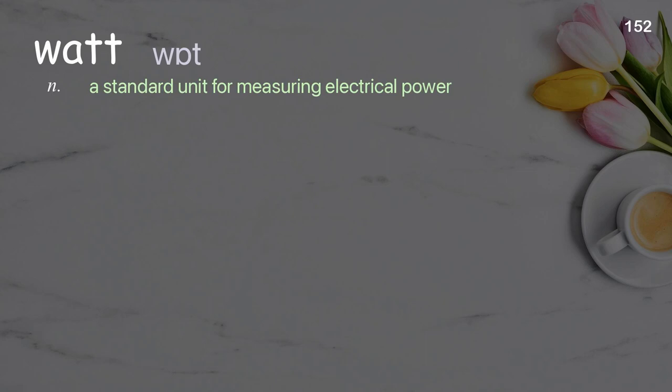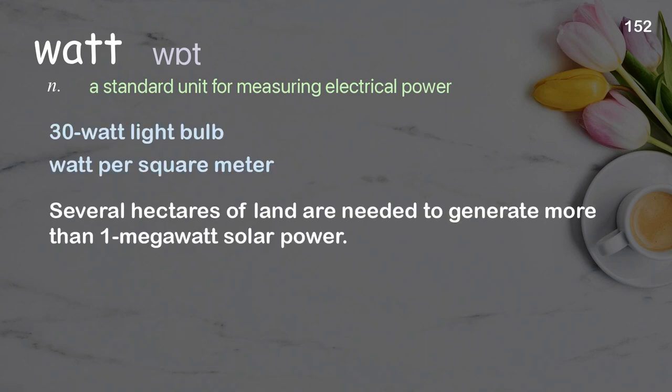Watt: a standard unit for measuring electrical power. Examples: 30-watt light bulb; watt per square meter. Several hectares of land are needed to generate more than one megawatt of solar power.